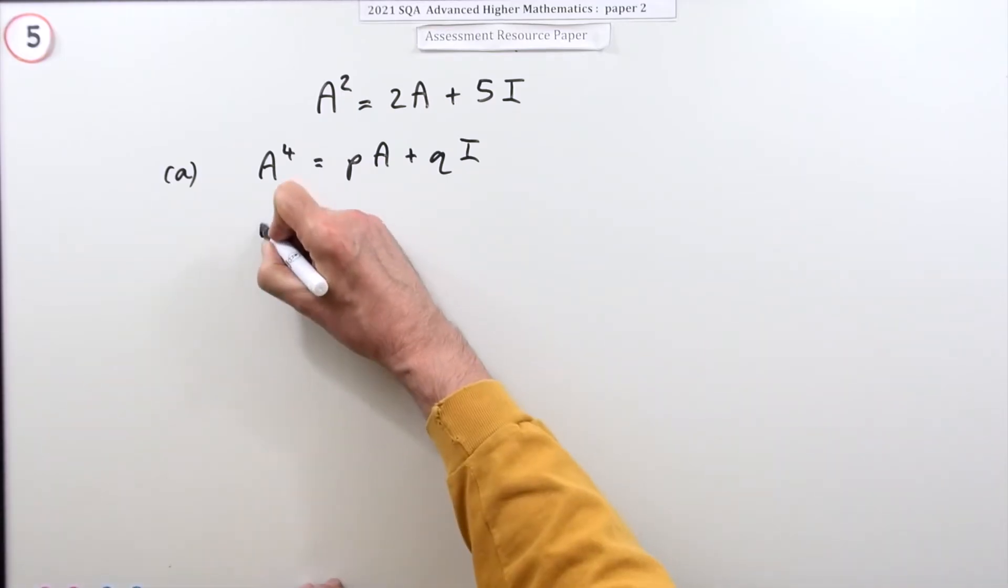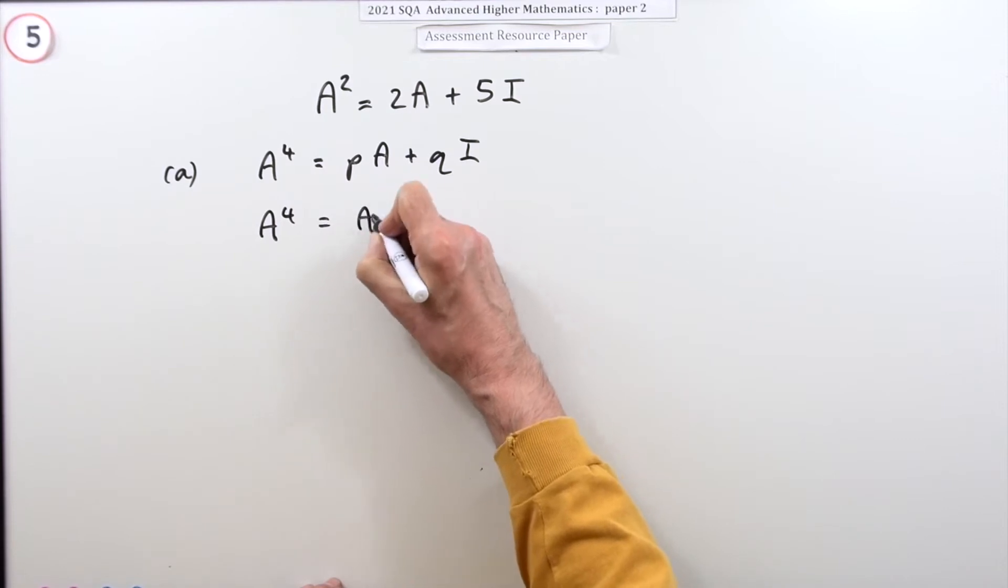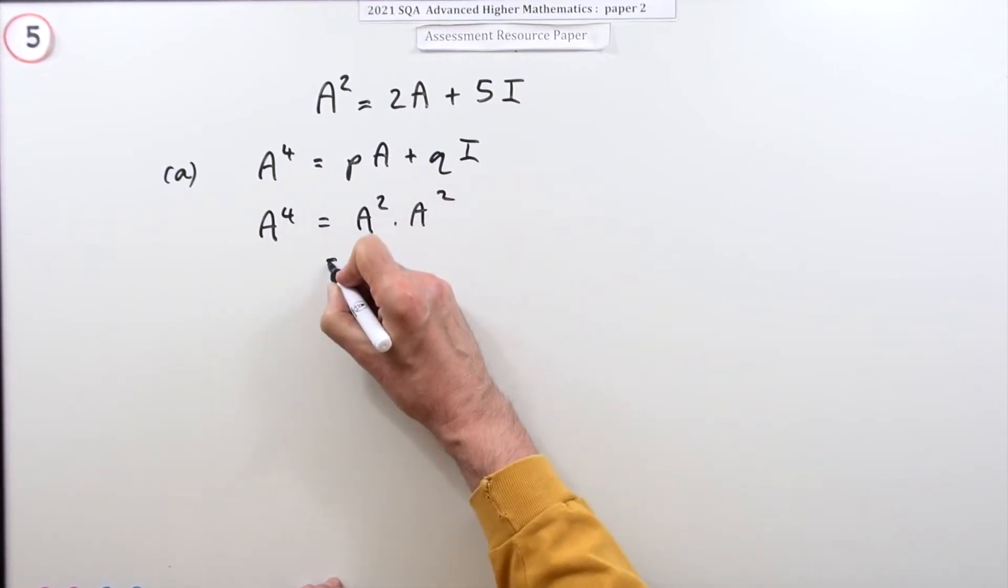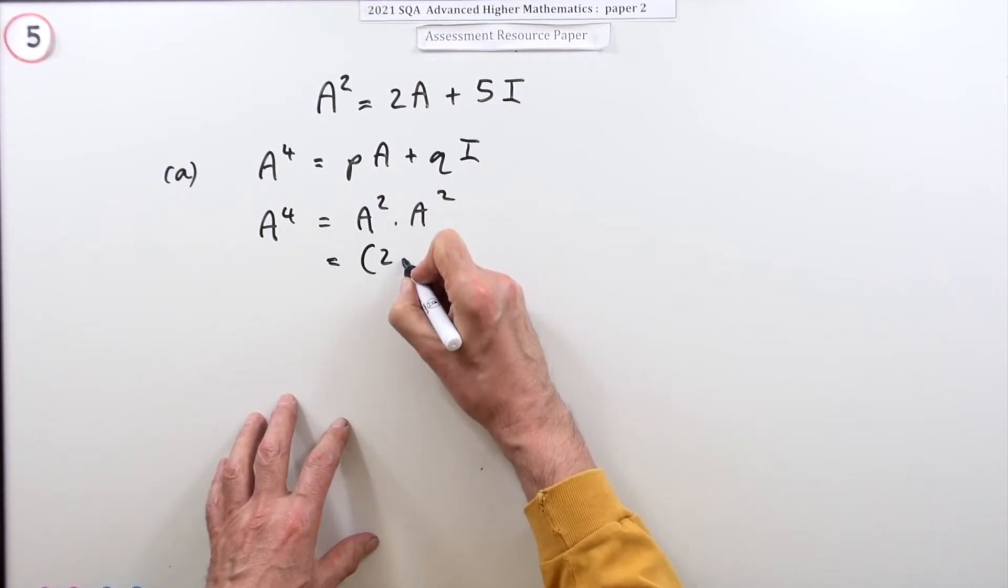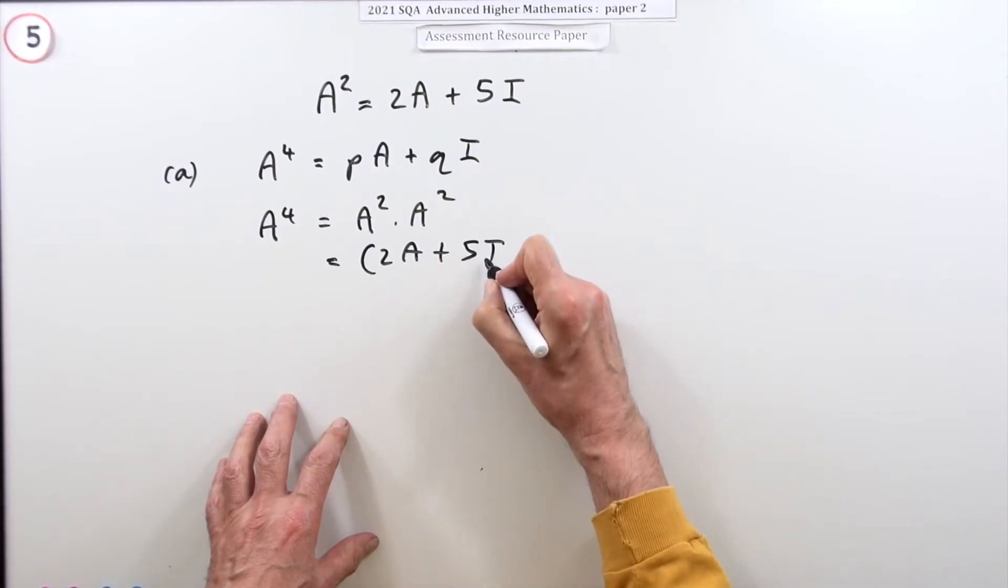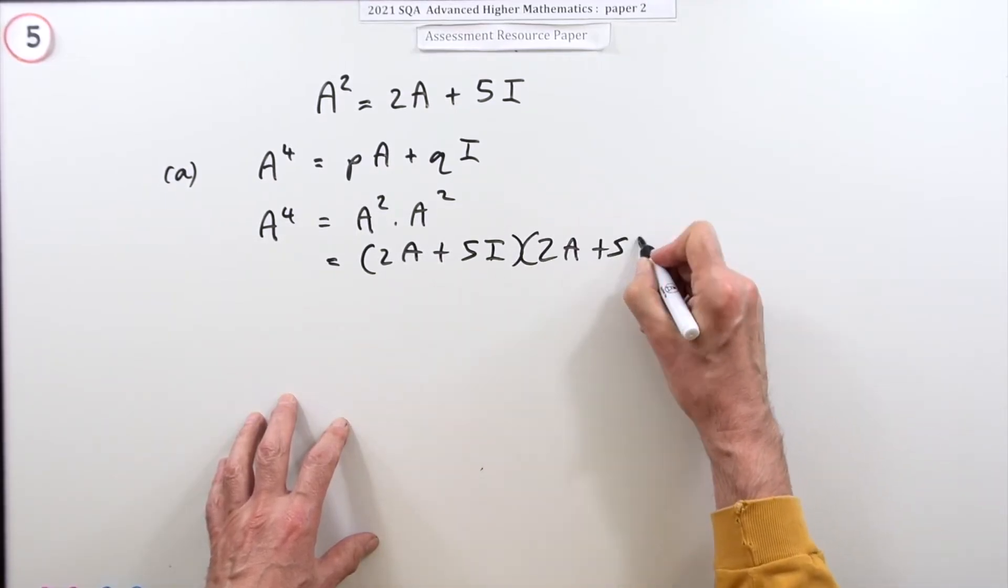Well, A to the four would be A² times A²—it's just algebra. So it's going to be (2A + 5I) times (2A + 5I).